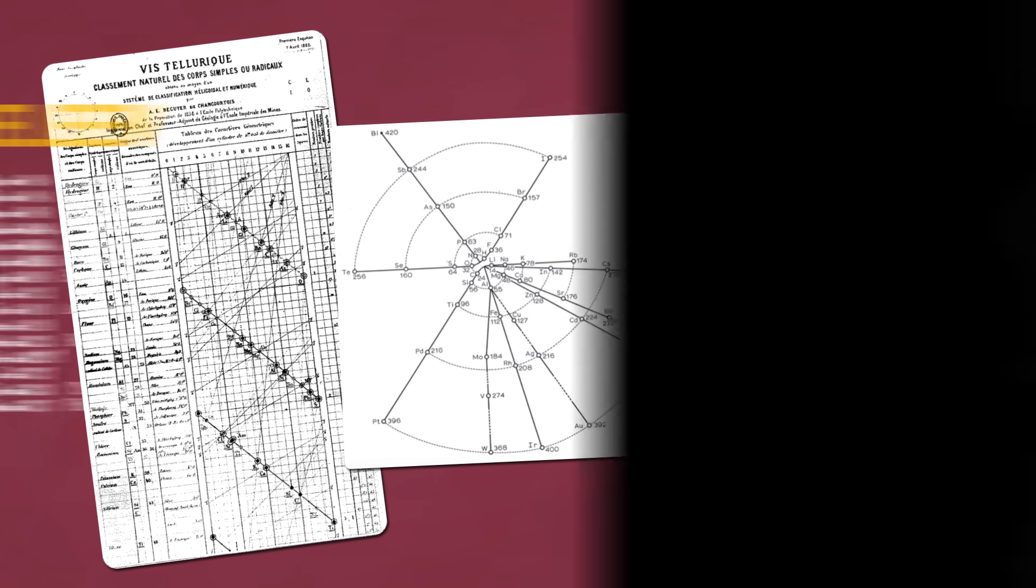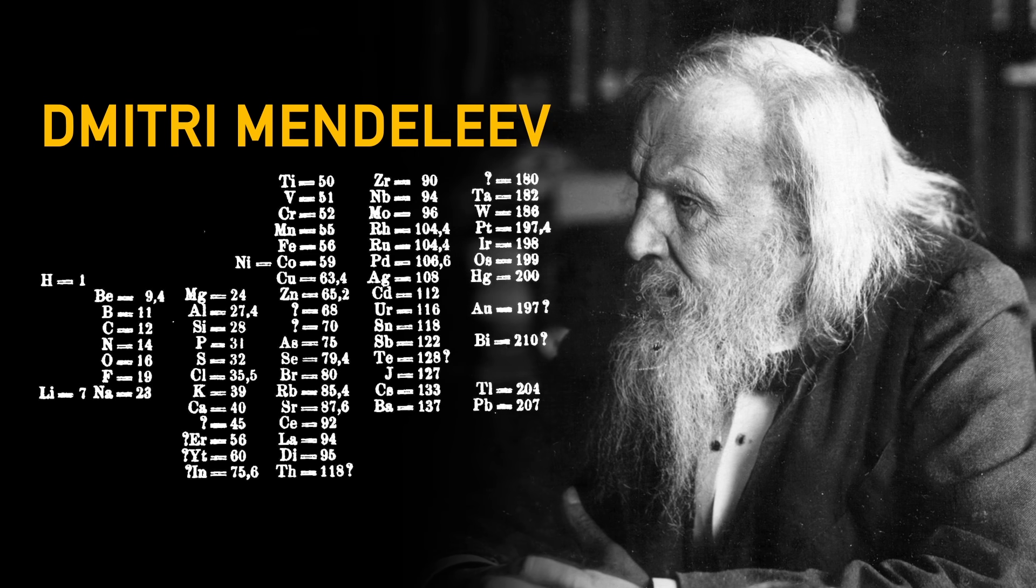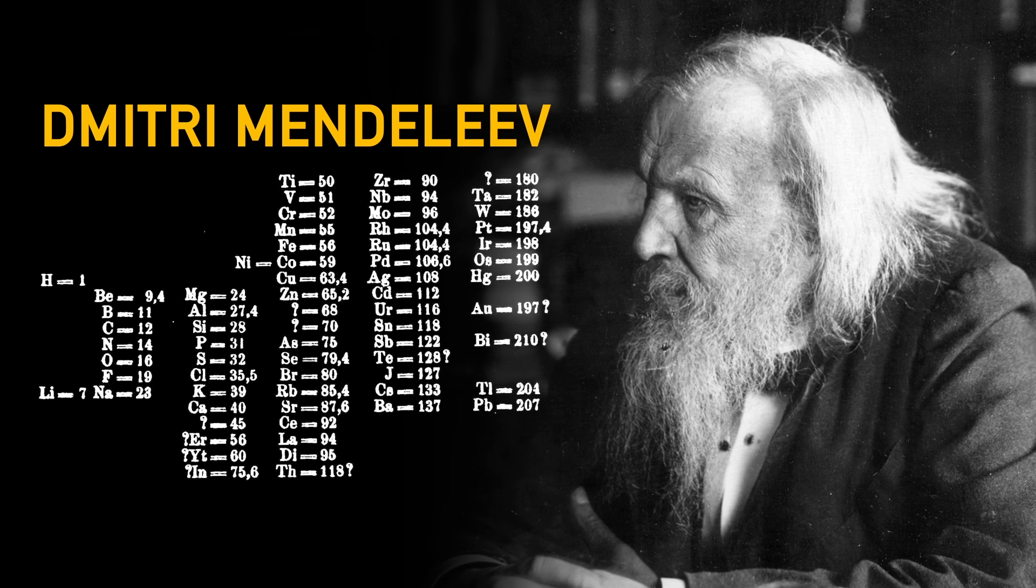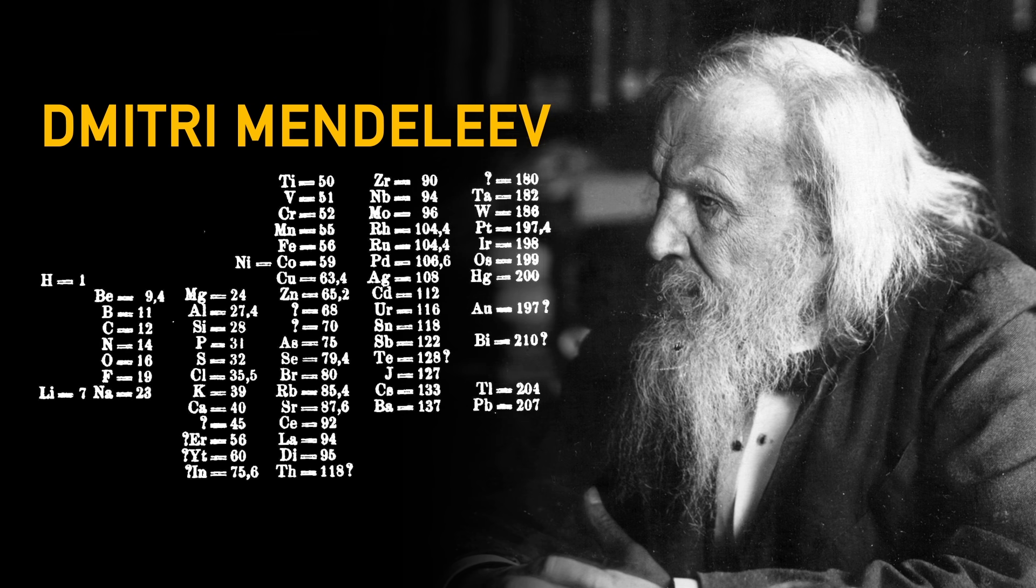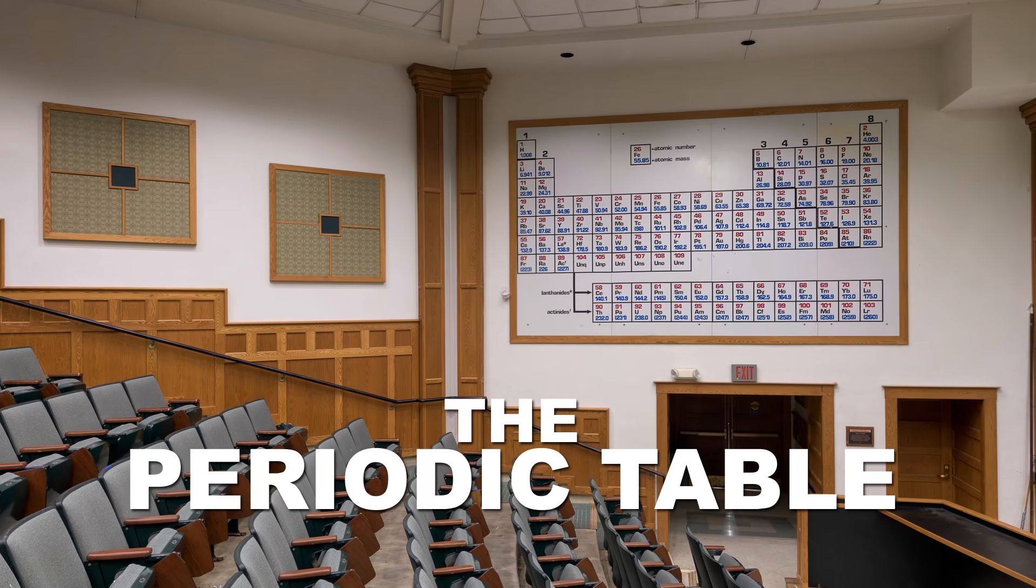But it wasn't until 1869 that legendary Russian scientist Dmitry Mendeleev developed an elegant and very useful method which would later evolve into one of science's most brilliant icons, the periodic table.